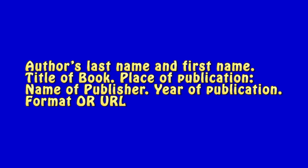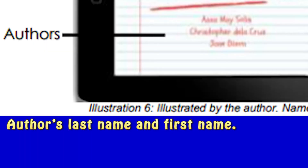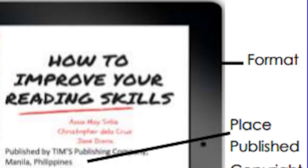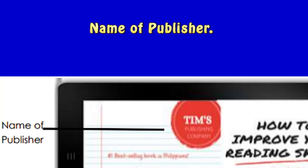In the illustration: the publisher is Teams Publishing Company, the title of the book is 'How to Improve Your Reading Skills,' the authors are listed, the place published is Manila, Philippines, and the copyright year is 2018. The format is: author's last name first, followed by first name, then title of book, place of publication, name of publisher, year of publication.